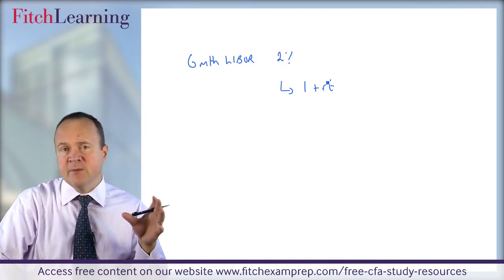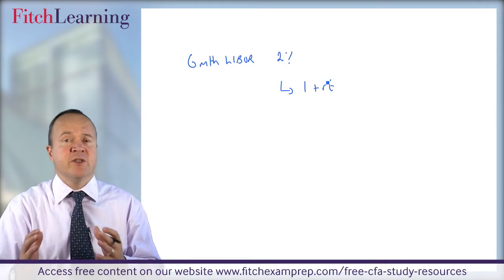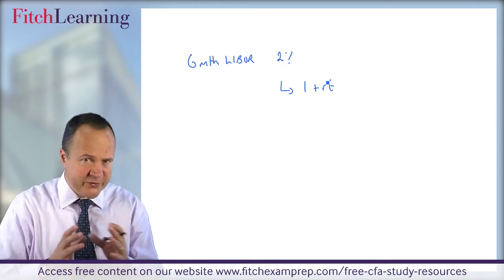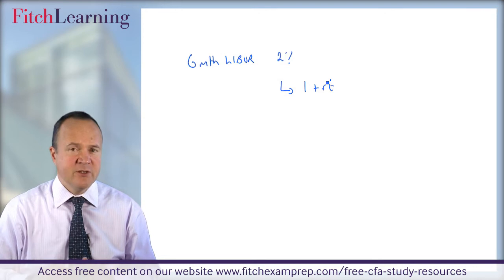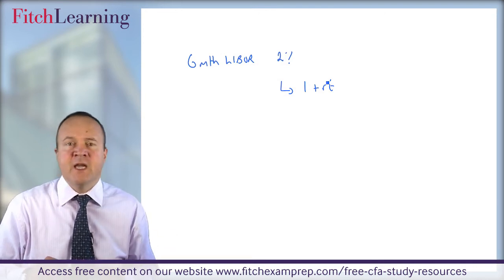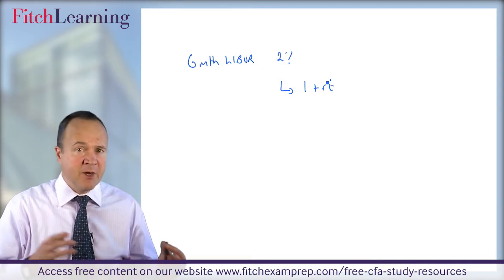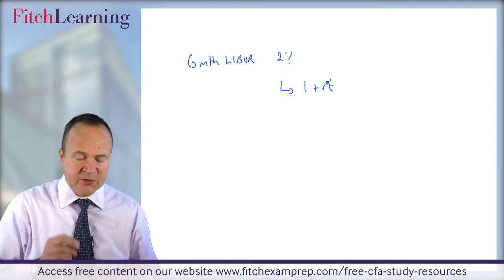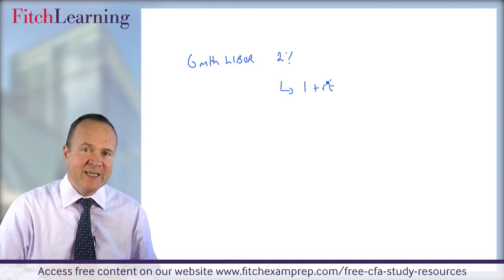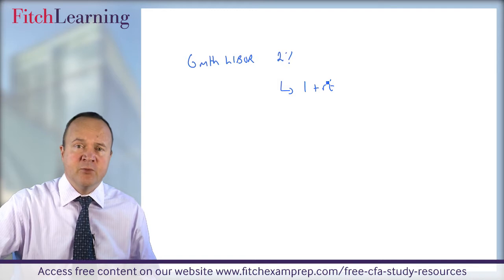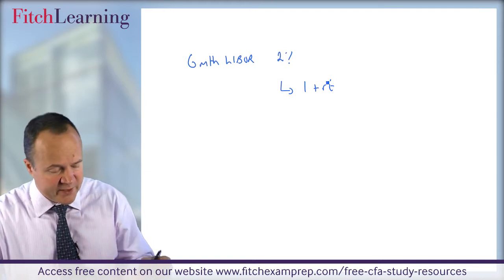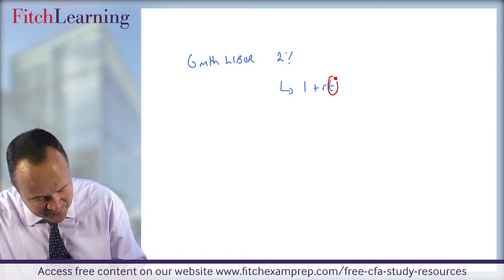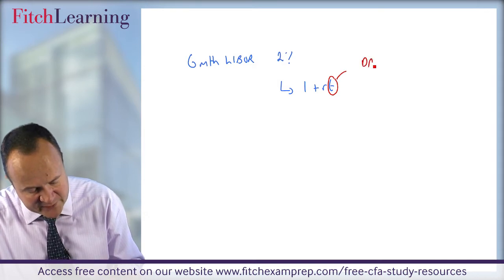In the money markets in the real world there are lots of different conventions for de-annualizing a rate. In our CFA land there's only one convention, which is the main one, certainly in American money markets and Euro. So we're using T to be a fraction of a year, but where a year is based on 360. So the T part is based on the number of days over 360.